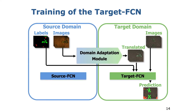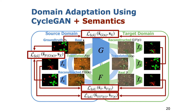In particular, we transfer images from the source domain into the style of the target domain. We finally train the target FCN in a supervised manner using the translated images in the style of the target domain alongside with copied labels from the source domain. We propose additional semantic consistency constraints for training the domain adaptation.